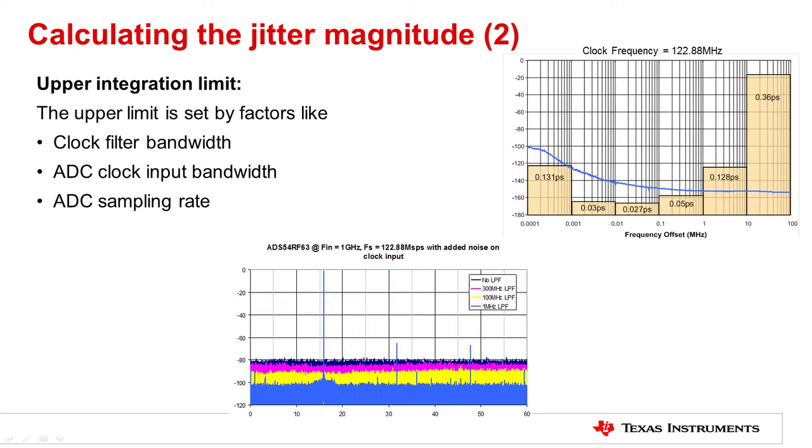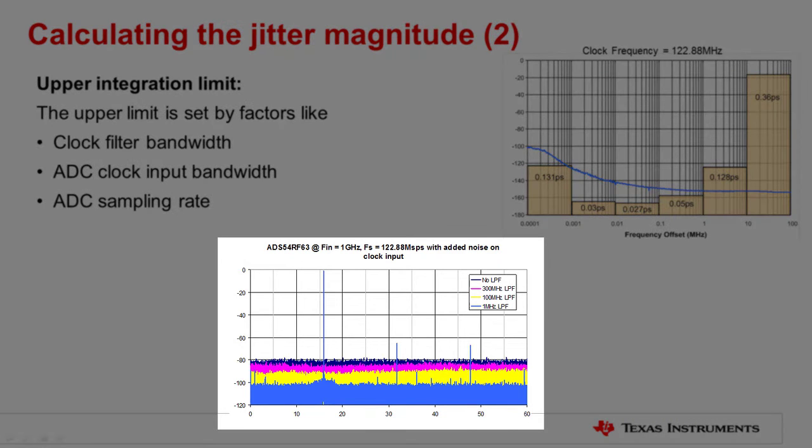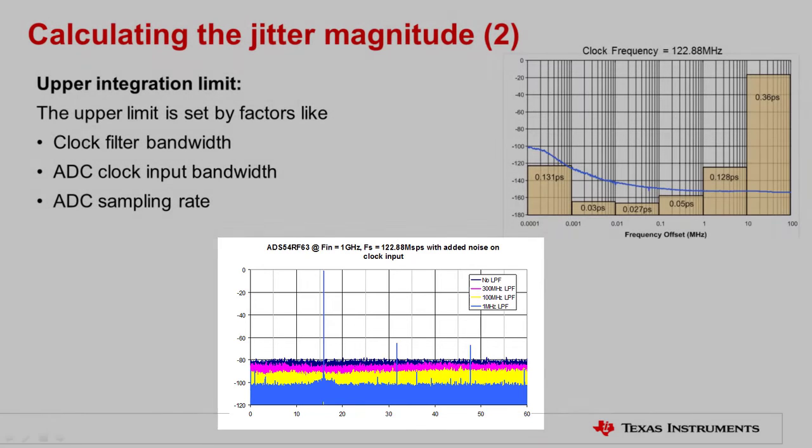As a simple experiment, I added white noise to the clock input of the ADS5463. Then I used different low-pass filters to illustrate the impact to the broad noise floor of the ADC. The results are illustrated in the bottom figure. As expected, the worst noise floor degradation is obtained when no filter is used. As I reduced the corner frequency of the low-pass filter on the clock input from 300 MHz to 1 MHz, the resulting overall noise floor degradation got better and better.